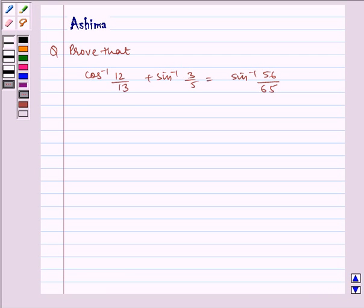Hello and welcome to the session. Let us understand the following problem. Prove that cos inverse 12 by 13 plus sin inverse 3 by 5 is equal to sin inverse 56 by 65.